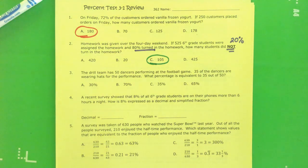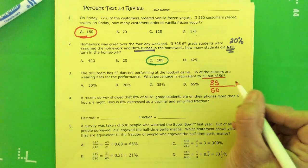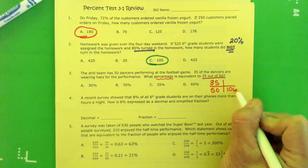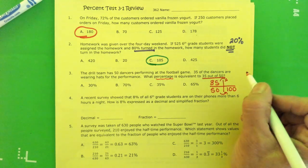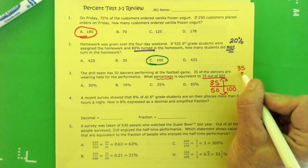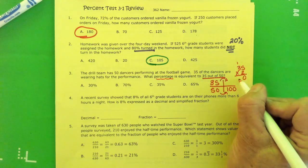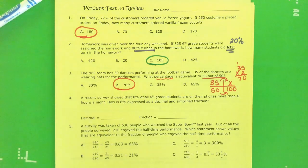Number 3. The drill team has 50 dancers performing at the football game. 35 of the dancers are wearing hats for the performance. What percentage is equivalent to 35 out of 50? I just make my table like this. 35 out of 50. But they're asking what percent. And we know all percents are out of 100. So how did 50 get to 100? It did a times 2. So what you do to the bottom, do to the top. 35 times 2, I get 70 for this space. Which would be 70 out of 100. 70%.